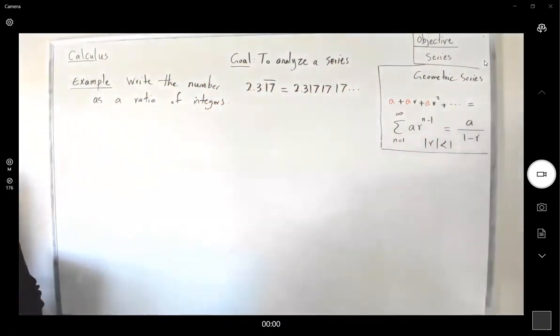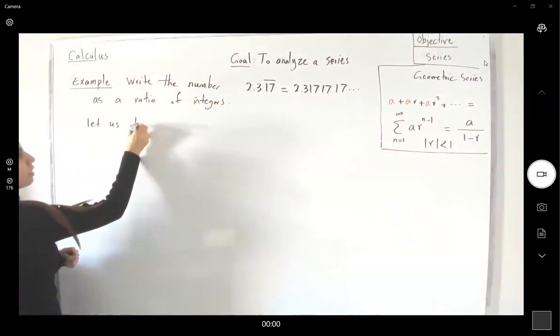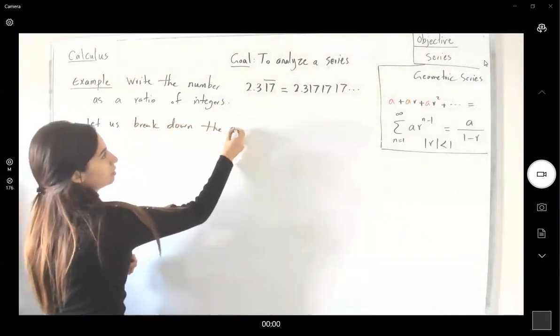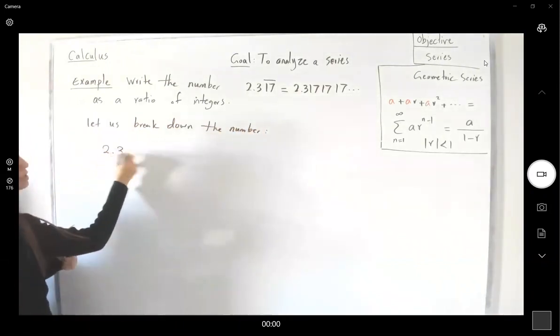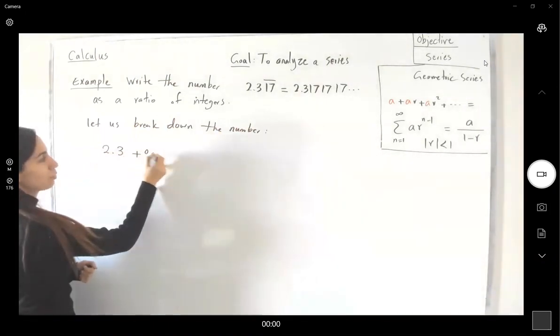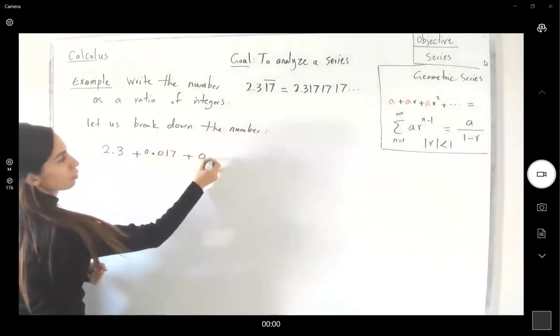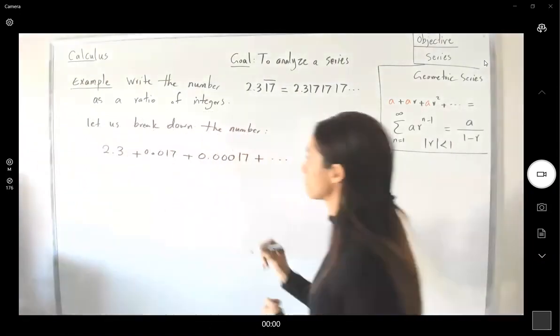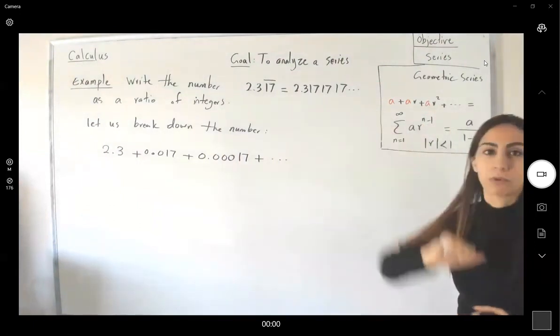Ratio of integers. Let's see what we have here. So let us break down the numbers. You have 2.3 plus 17, this is 0.017 plus 0.00017 plus the rest of them. So if I add these decimals, I get this decimal number here.